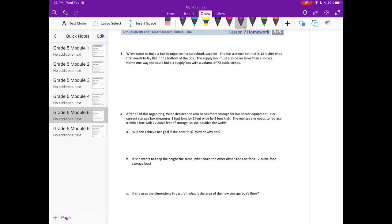Number 3: Wren wants to build a box to organize her scrapbook supplies. She has a stencil set that's 12 inches wide that needs to lay flat on the bottom of the box. The supply box must also be no taller than 2 inches. Name one way she could build a supply box with a volume of 72 cubic inches. So we know the box should be no taller than 2, and part of the base needs to be 12 inches wide.